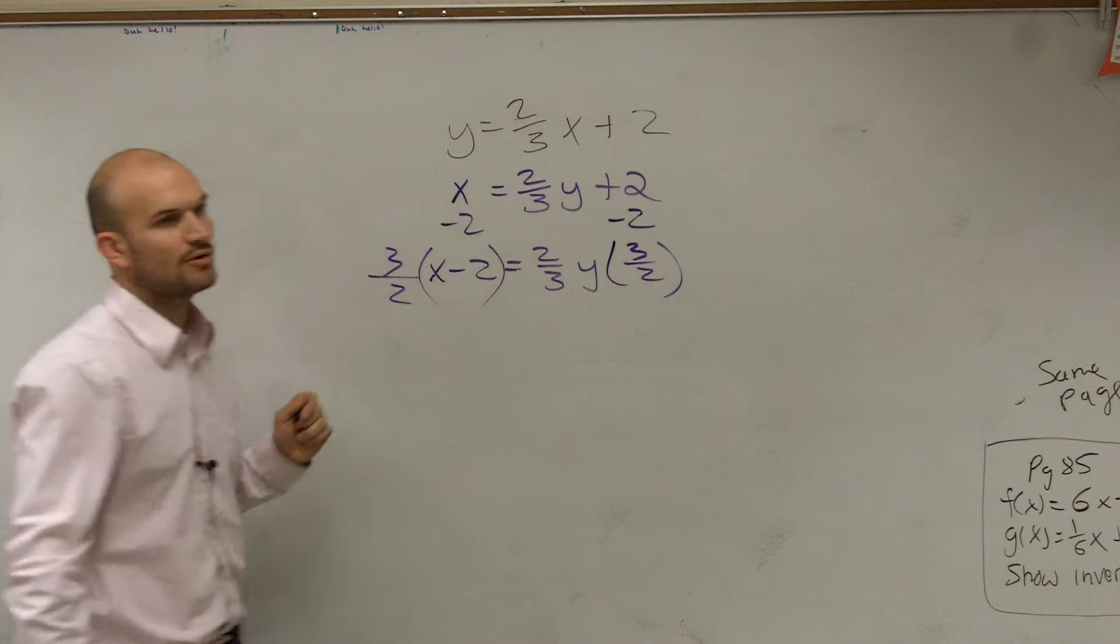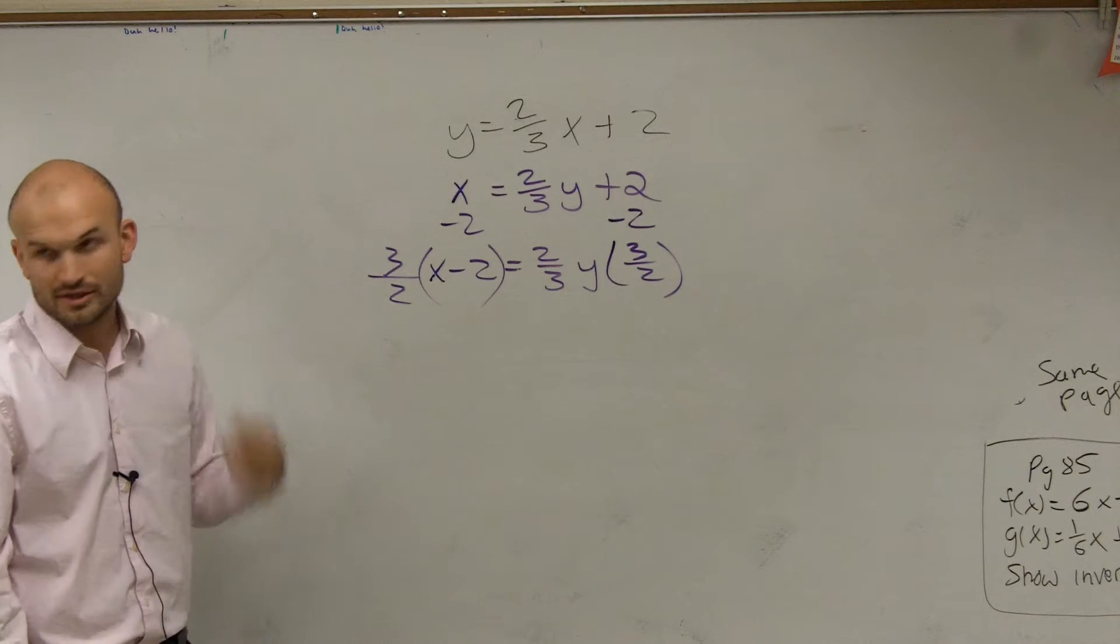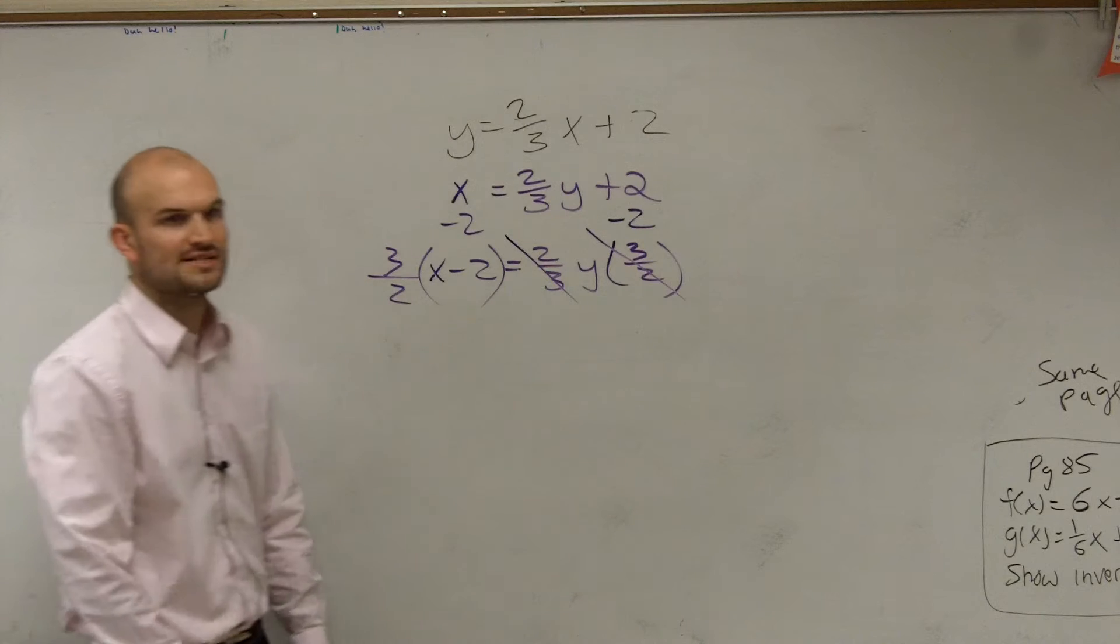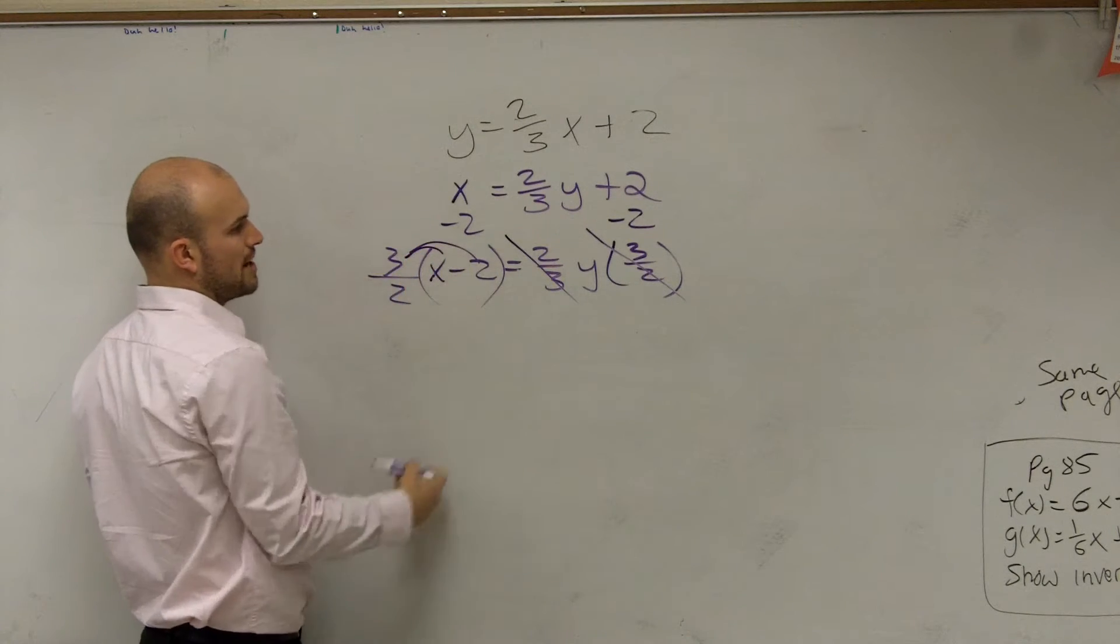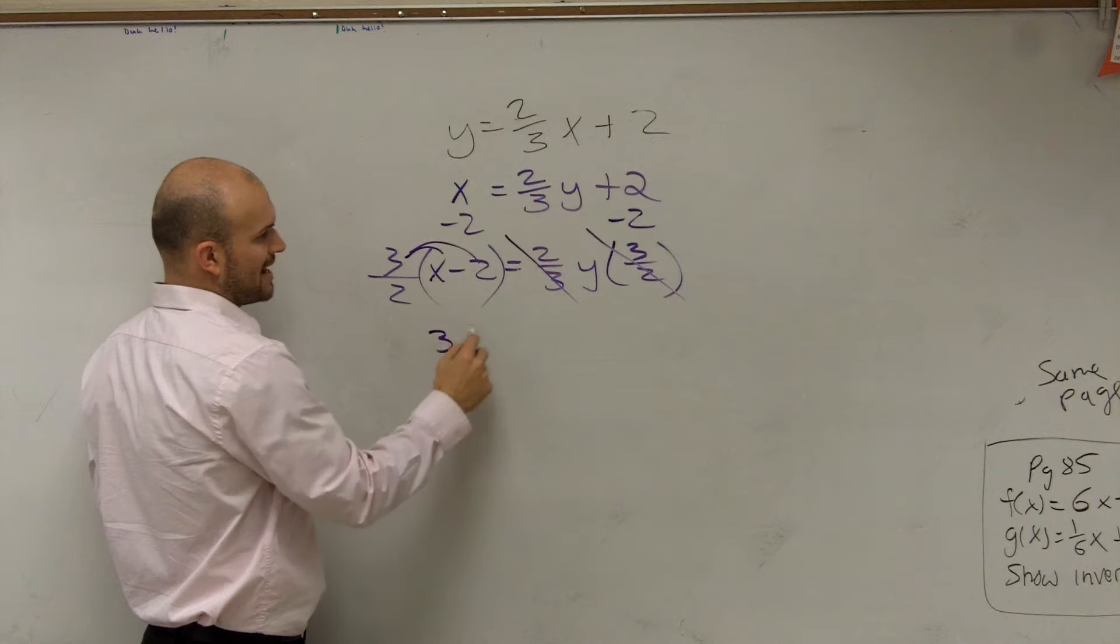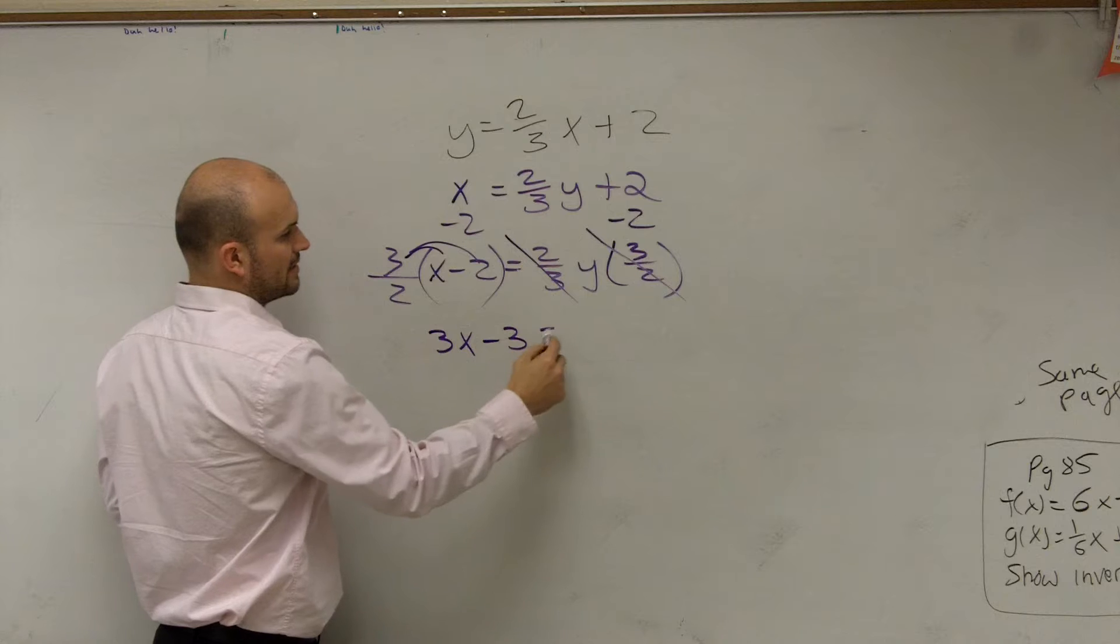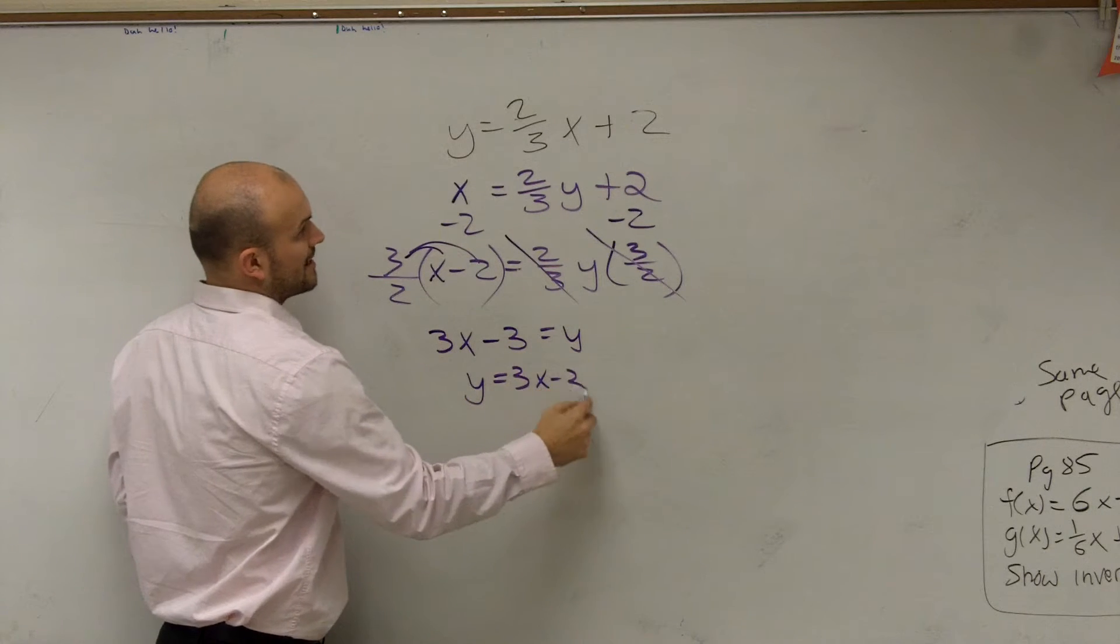Make sure you put that in parentheses. So many students will forget to put it in parentheses, and then they'll get the problem wrong. So we know that any number multiplied by its reciprocal multiplies to 1. 1 times y is just y. Then, distributive property. This becomes 3x, the 2's divide out to 1, minus 3 equals y. y equals 3x minus 3.